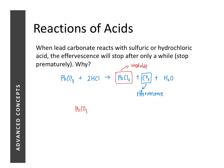When lead carbonate reacts with hydrochloric acid, as the reaction goes on, it forms an insoluble layer of lead(II) chloride. This insoluble layer of lead(II) chloride acts as a barrier to prevent any further reaction — to prevent hydrochloric acid from reaching the lead carbonate. Therefore, the reaction will stop.